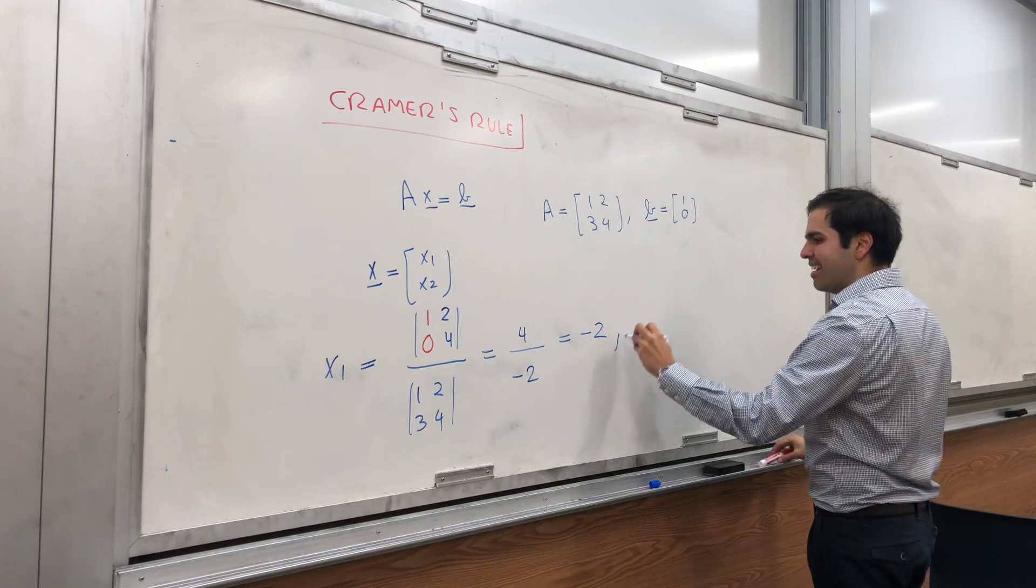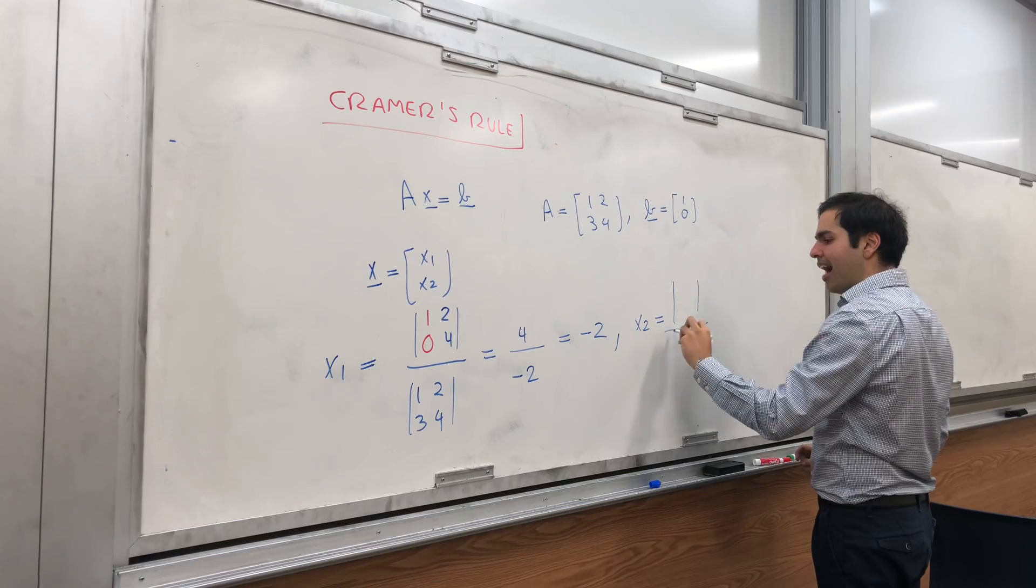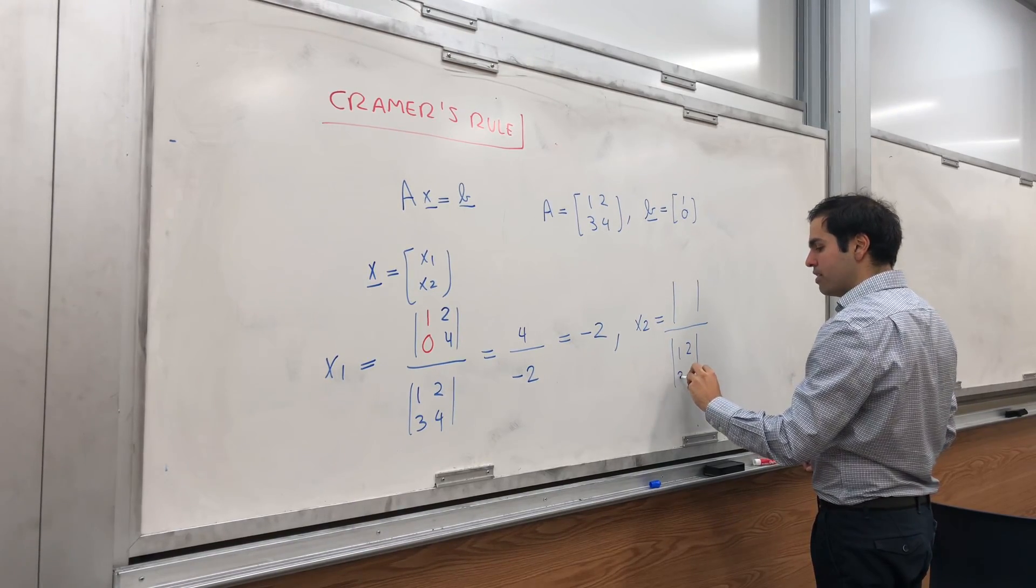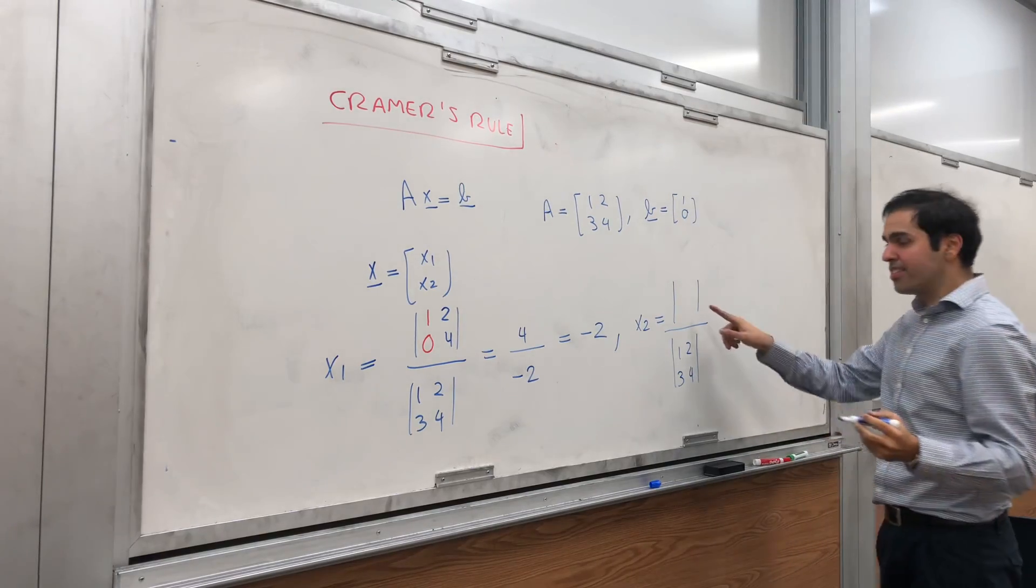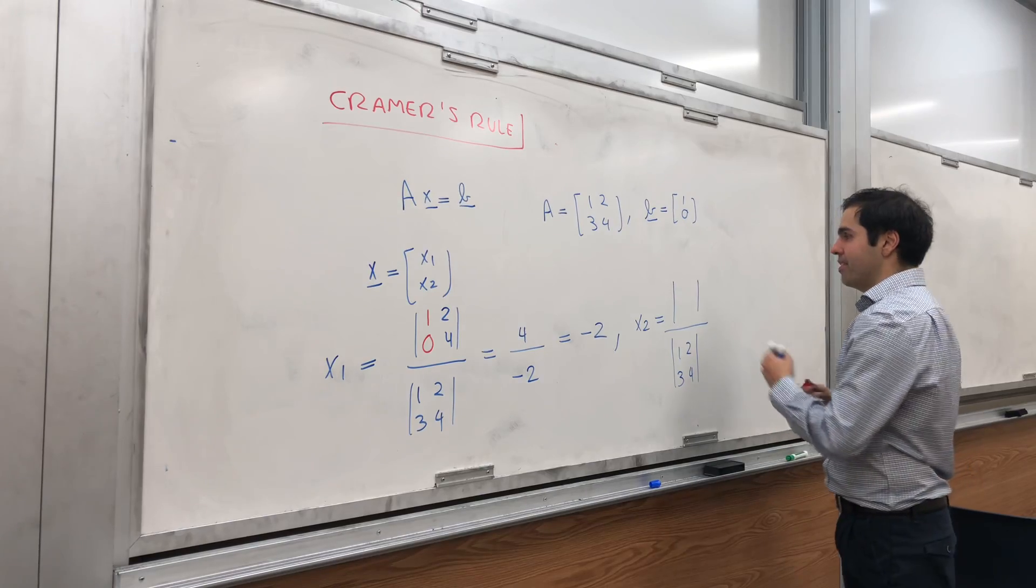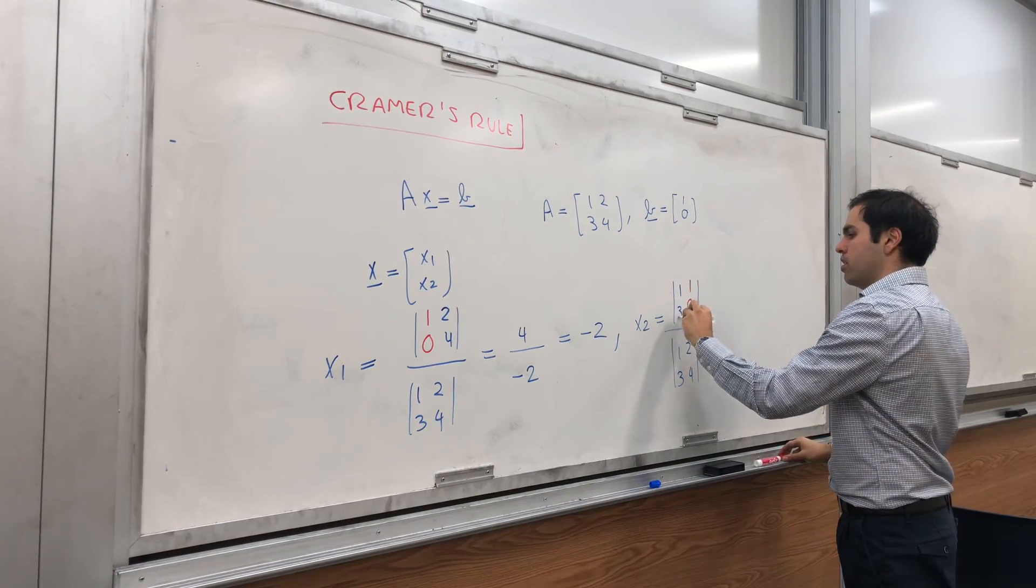And then what about x2? Again, the denominator is still A, so [1, 2; 3, 4]. And this time you replace the second column by b, so [1, 0] and then [1, 3].